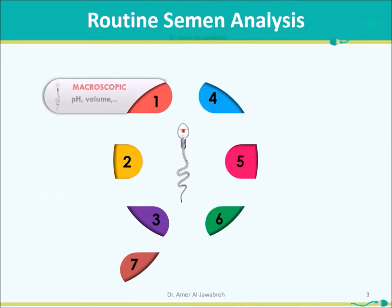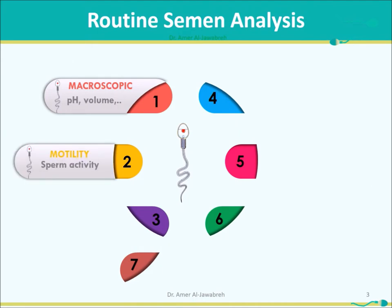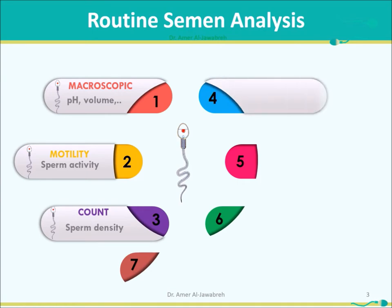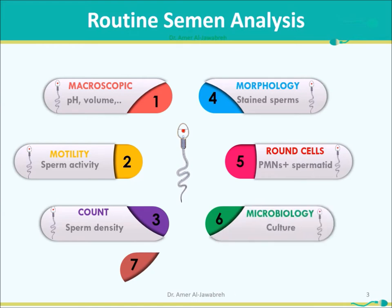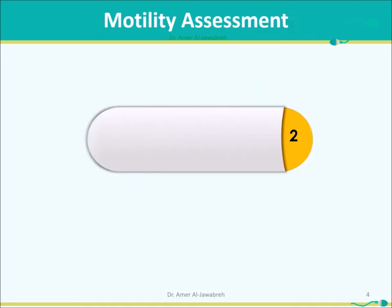Routine semen analysis covers seven parameters: 1. Microscopic, 2. Motility, 3. Count, 4. Morphology, 5. Round cells, 6. Microbiology, and 7. Fructose. Motility assessment is the first practical step.